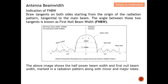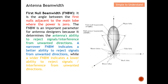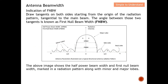In this diagram, let me describe the FNBW more clearly. You draw tangent lines on both sides from the origin of the radiation pattern, tangent to the main lobe. The angle between these two tangents is known as the First Null Beam Width. The first null is the first zero point on either side of the main lobe. This region is what we call the First Null Beam Width.